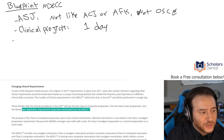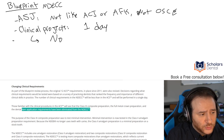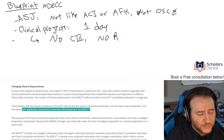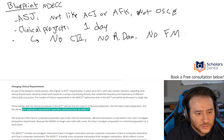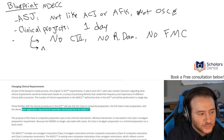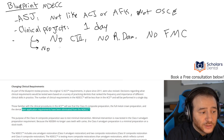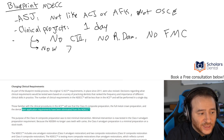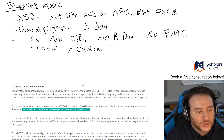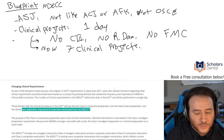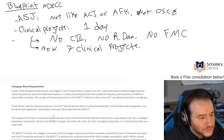So which projects are eliminated? No class three composite, no rubber dam, and no full metal crown. That takes us to nine projects. And out of those nine, you have infection control and record keeping. So really, now you have seven clinical projects.